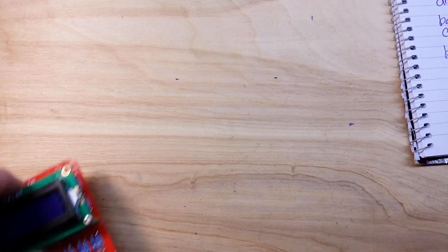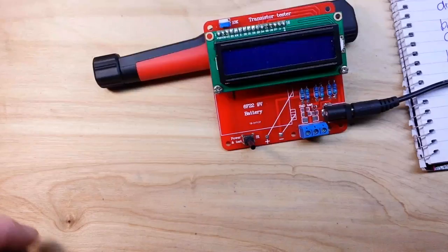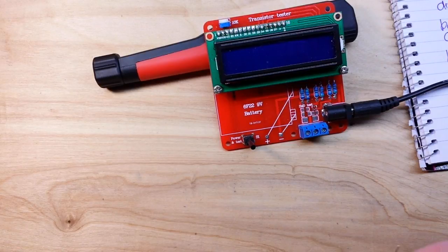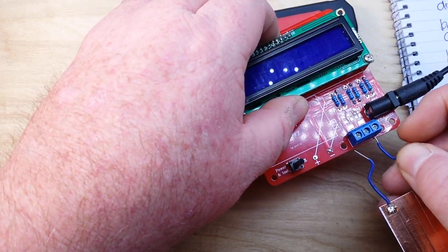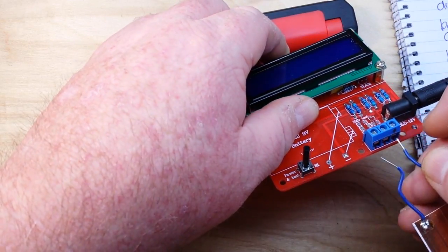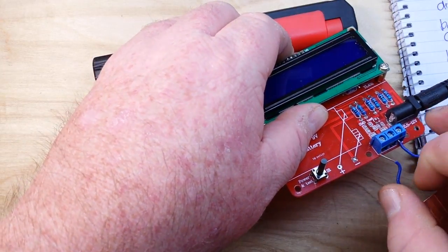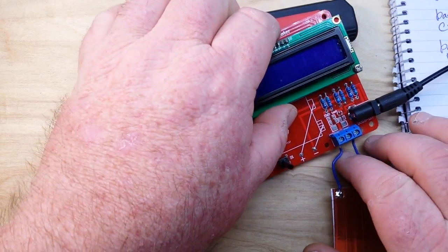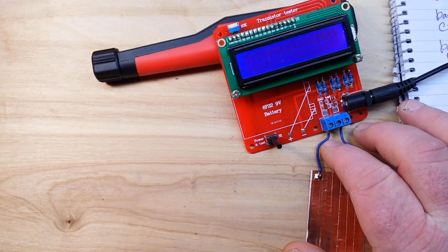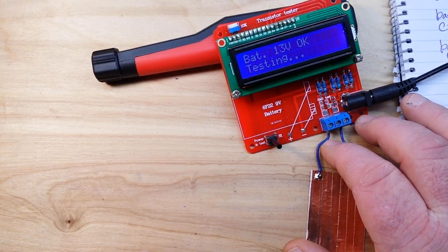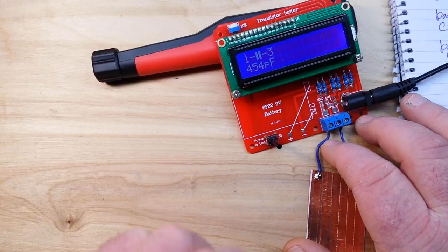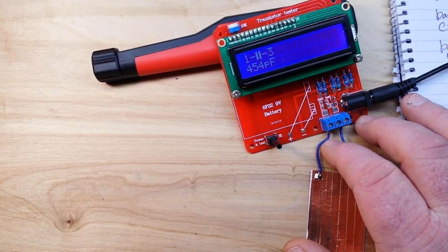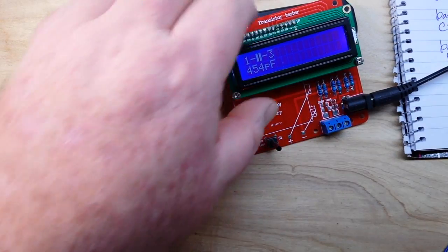If we power up this little tester here, sorry about that I lost my little electrical connector there. So if we place this capacitor here in the tester, I'm just going to hold it in there. You can see that it comes up as a capacitor between pins one and three with a capacitance of 455 picofarads. Quite simple, right?